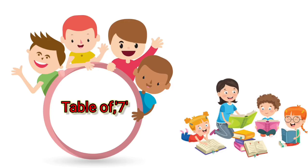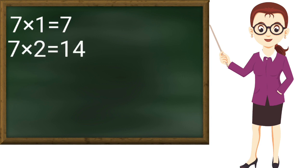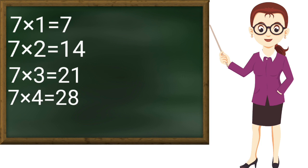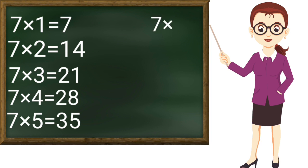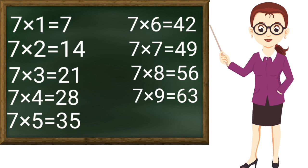Now table of 7: 7 ones are 7, 7 twos are 14, 7 threes are 21, 7 fours are 28, 7 fives are 35, 7 sixes are 42, 7 sevens are 49, 7 eights are 56, 7 nines are 63, 7 tens are 70. Thank you ma'am.